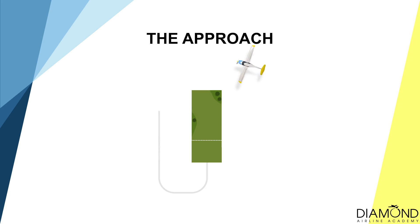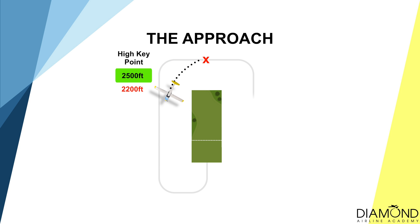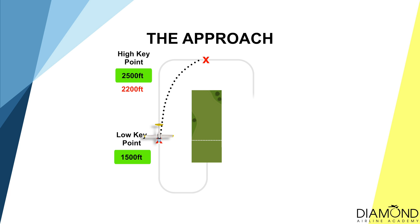For example, if the aircraft reaches the high key point at 2,200 feet above ground — 300 feet below the target altitude — to reduce the gliding distance, fly directly from the high key point to the low key point in an attempt to reach it at 1,500 feet. During the execution of the planned circuit, we can proceed with the next stage: the troubleshoot checks.